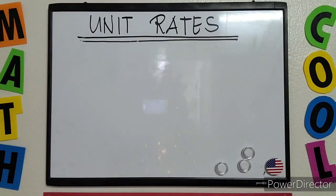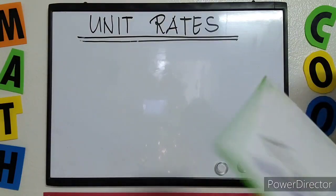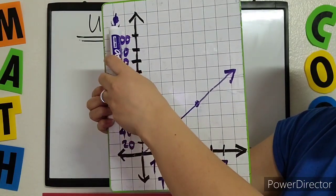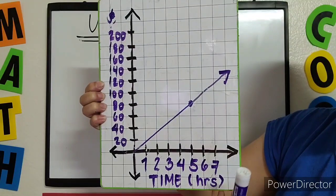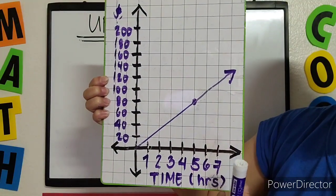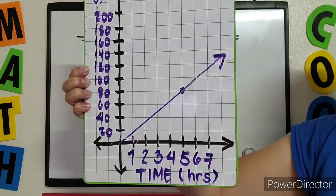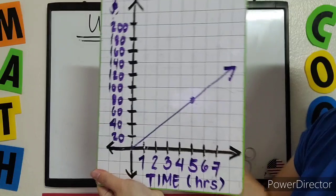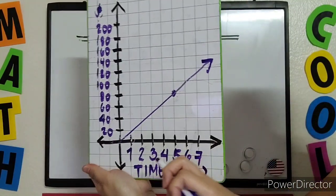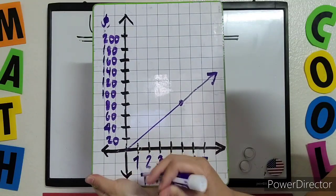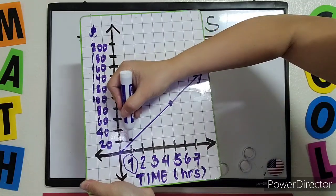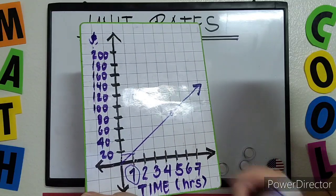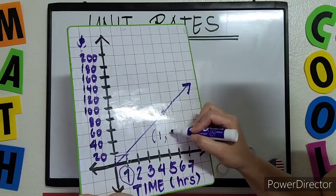Let's start with the graph. Suppose we have a graph that shows the relationship between the amount earned in dollars and the time in hours. To find the unit rate from a graph, look for the ordered pair (1, Y) — find 1 on your X-axis and check the point on the graph.